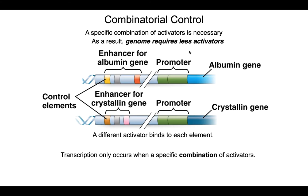Both the albumin and crystalline genes depend upon a gray activator — we're reusing that gray activator that binds to its gray control element. But that alone isn't what turns on a gene. To get the albumin gene turned on, you need the gray activator, the yellow activator, and the red activator. To turn on the crystalline gene, you need the gray activator, the pink activator, and the orange activator. It's combinations of activators that turn on these genes, and it's this combinatorial control that allows the genome to require fewer activators — we use the ones we have in different combinations.